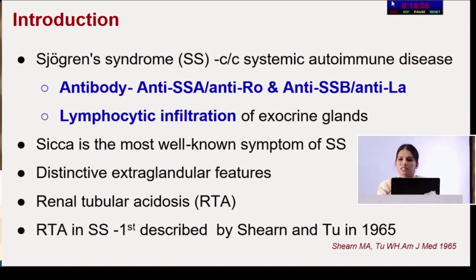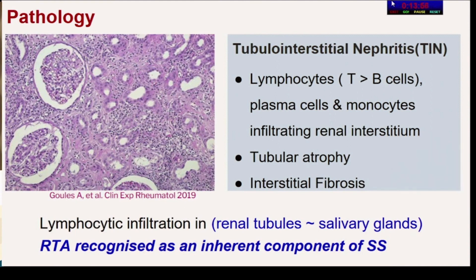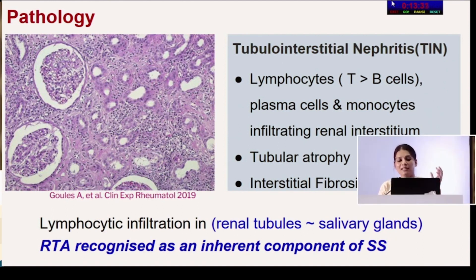RTA in Sjogren's syndrome was first described in 1965. The underlying pathology is characterized by tubular interstitial nephritis, with lymphocytes — T more than B cells — plasma cells, and monocytes infiltrating the renal interstitium. Tubular atrophy and interstitial fibrosis are present. This infiltration is very similar to that seen in the salivary glands, and with increasing case reports, RTA was recognized as an inherent component of Sjogren's syndrome.